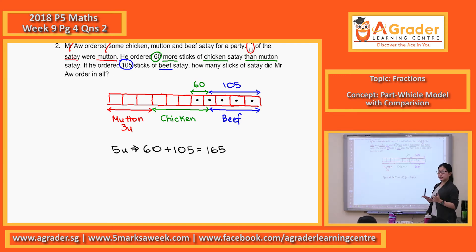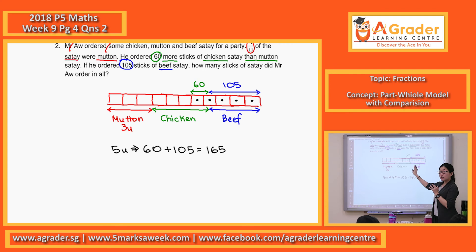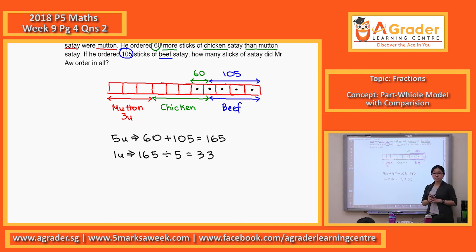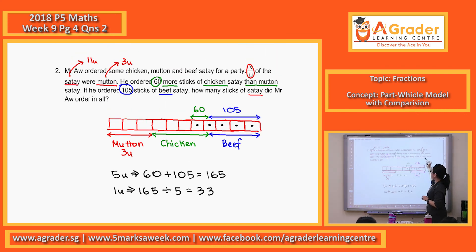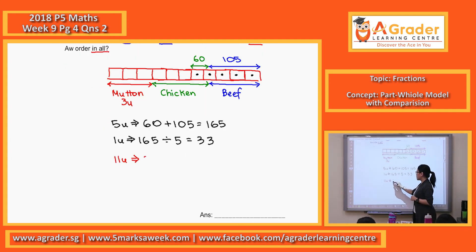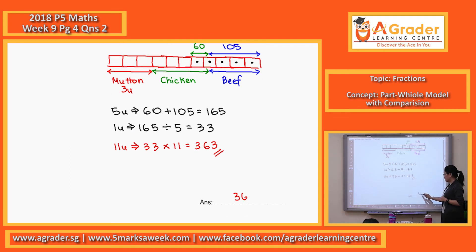So 5 units is 165. Now we look for 1 unit, which is 33. Now we look at the question: how many sticks of satay did Mr. R order in all? That means total. Remember our total units is 11, so we look for 11 units. 33 times 11 equals 363, which will be our final answer.